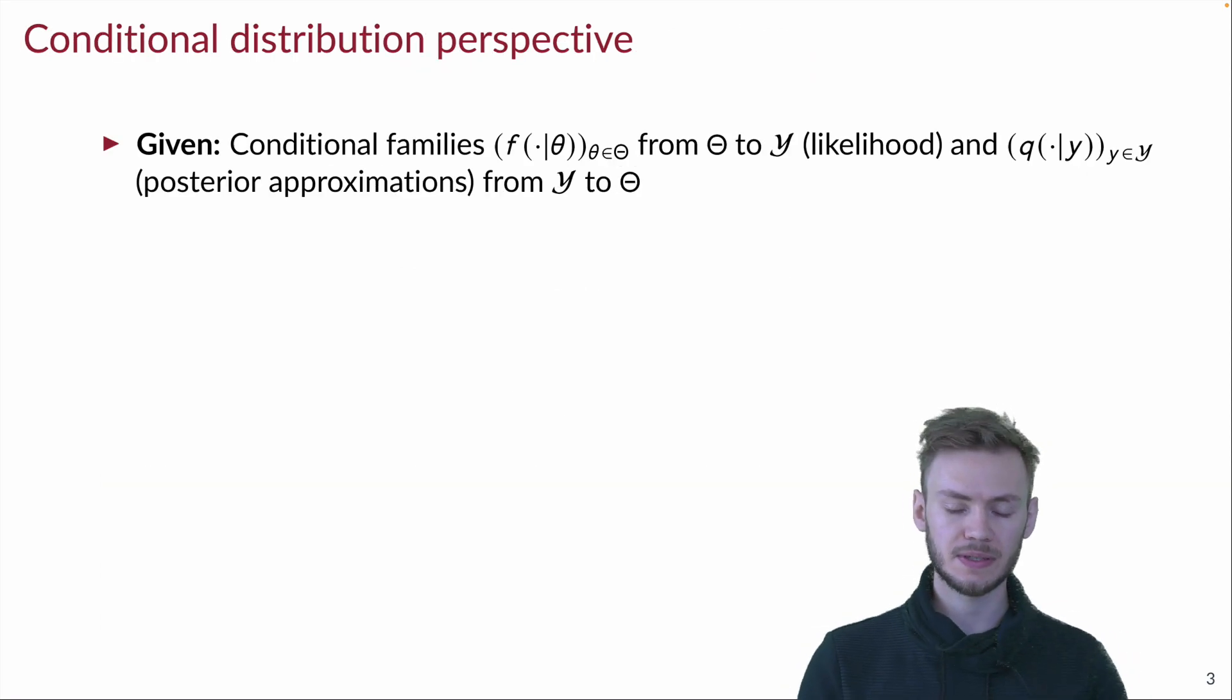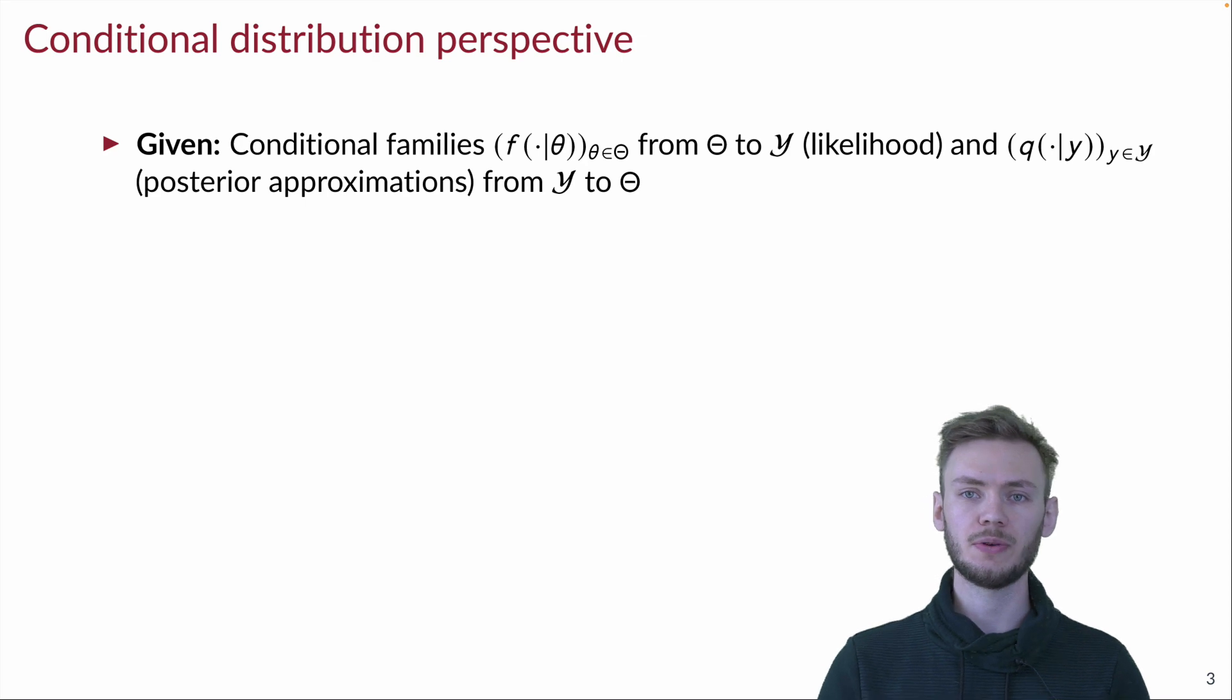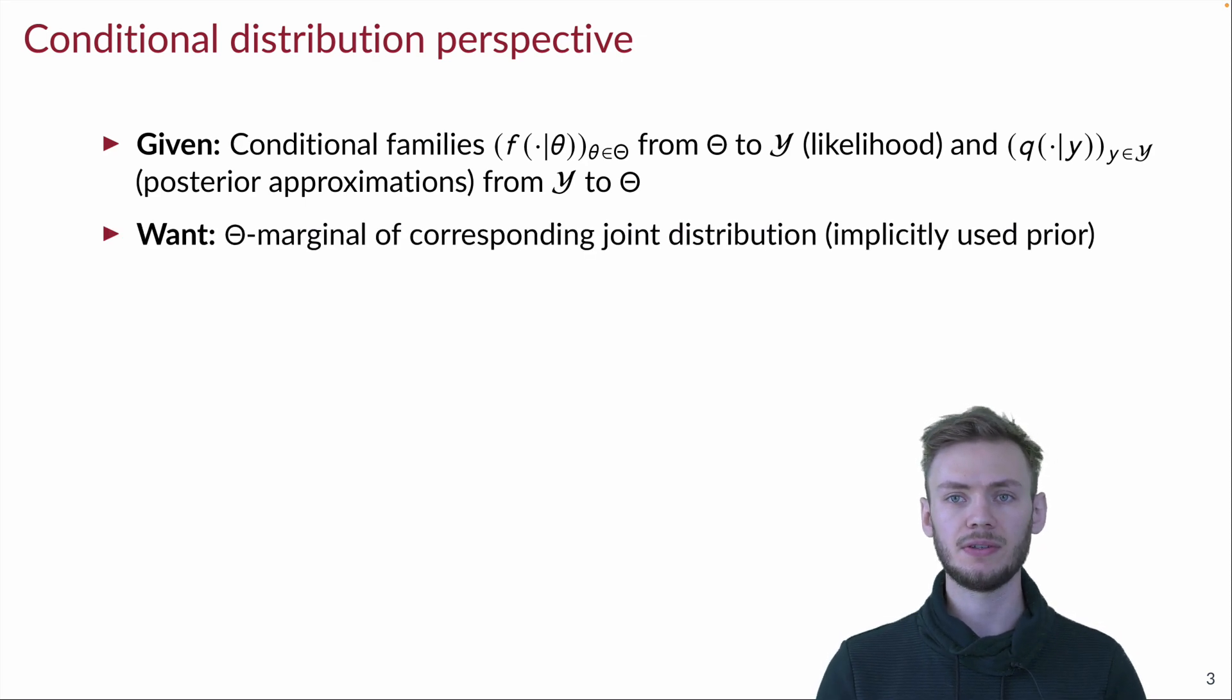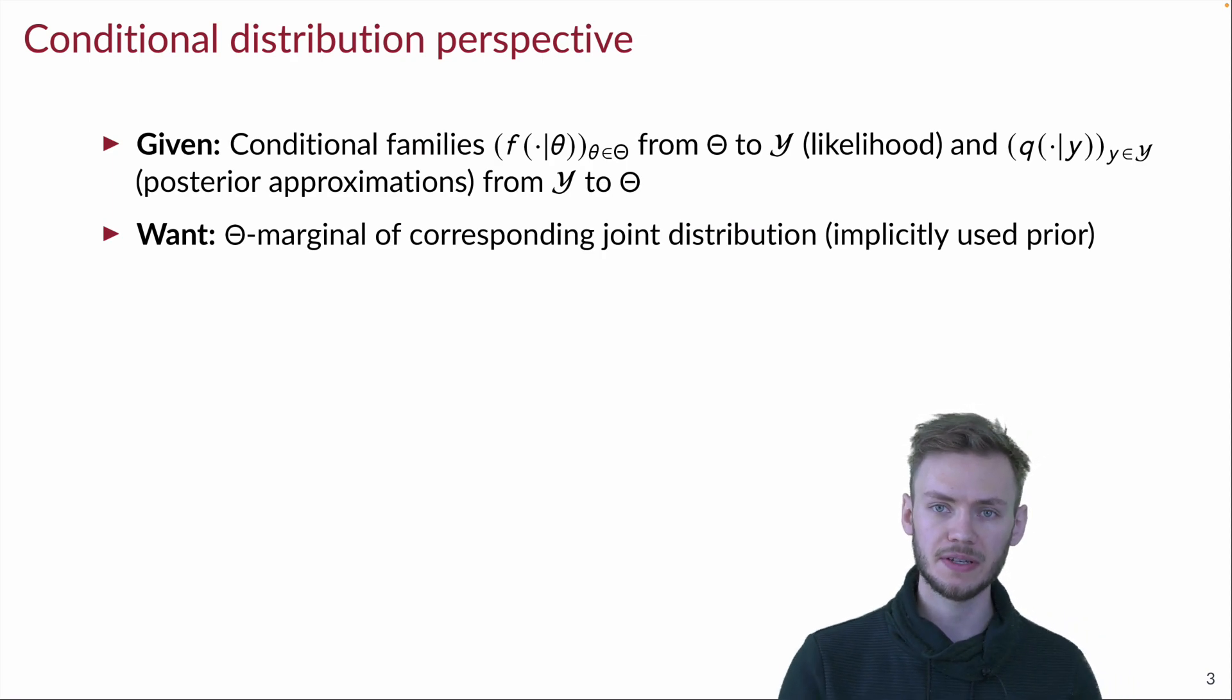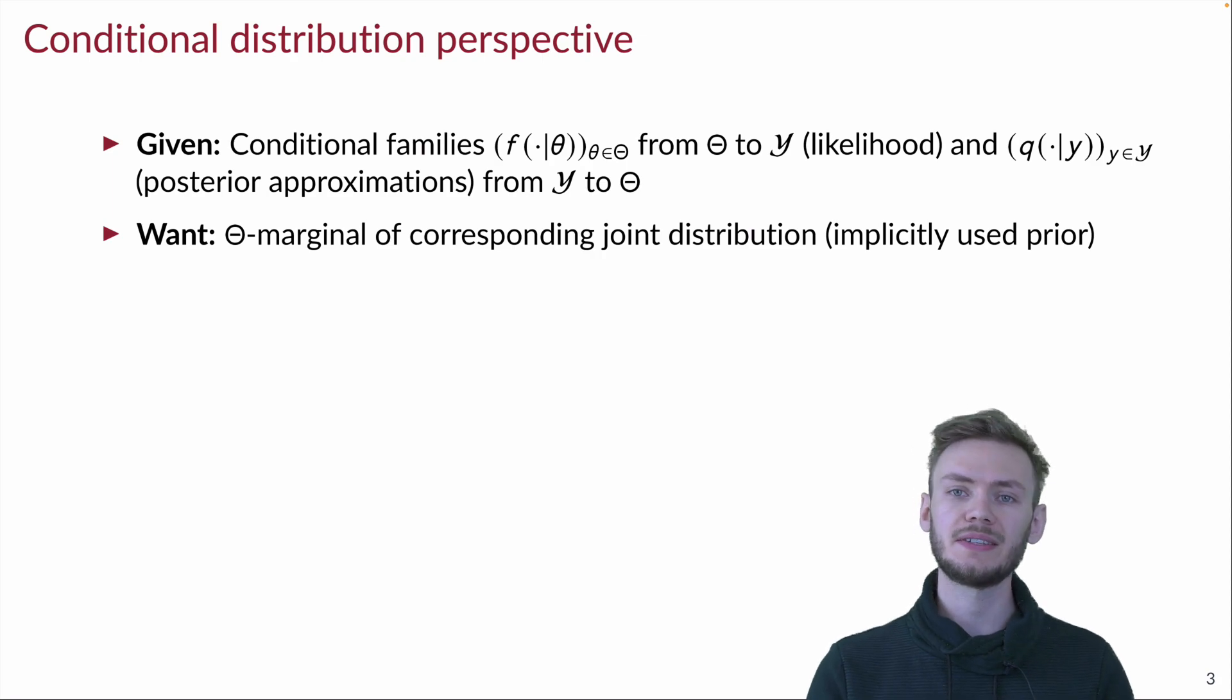The way we do this is by looking at the situation from a conditional distribution perspective. That is, we are given two conditional families on the joint space of latent variables theta and observations y, namely the likelihood f going from theta to y and the posterior approximations q going back from y to theta. And what we want is the theta marginal of the corresponding distribution that is implicitly defined by these conditionals, because in a Bayesian setting this theta marginal is exactly the prior.